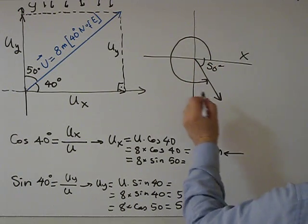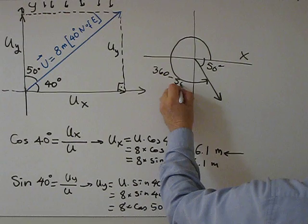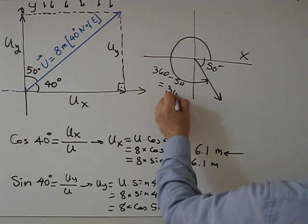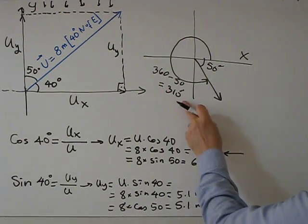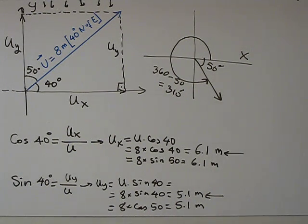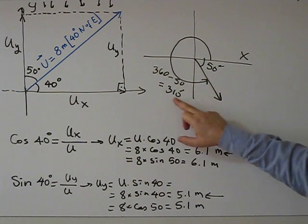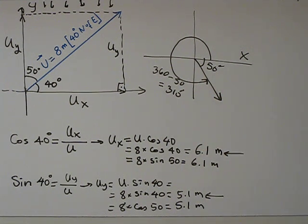So we calculate this angle. This is 360 minus 50, which is 310 degrees. So we use this angle. For the x component we use cosine 310 times magnitude. For the y component we use sine 310 times the magnitude of the vector.